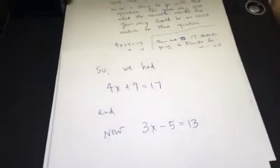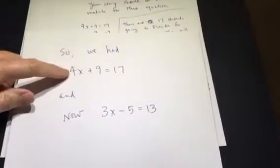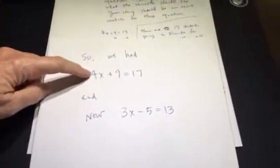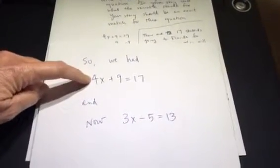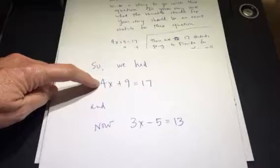The first one, this is just a comment about what I've asked you to do. So the first equation where I wrote a story, I gave you the spring break story, matched 4x plus 9 equals 17.